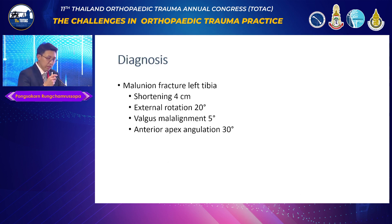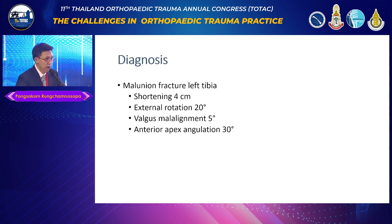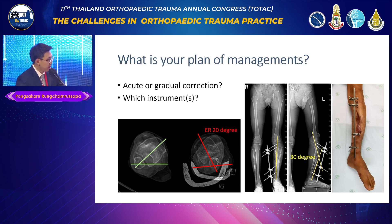The diagnosis in this case is malunion of the left tibia with shortening around four centimeters, external rotation 20 degrees, valgus malalignment 5 degrees, and anterior apex angulation 30 degrees. I would like to ask an opinion from my panelists: what is your plan of management in this case?